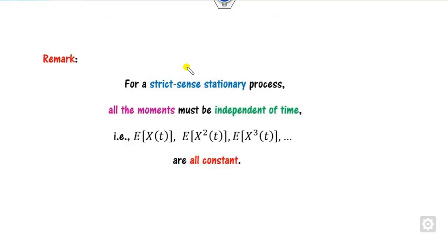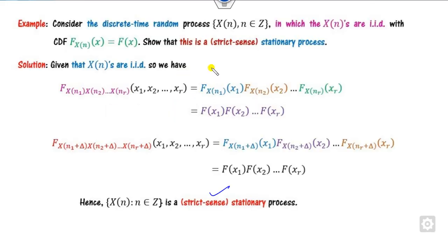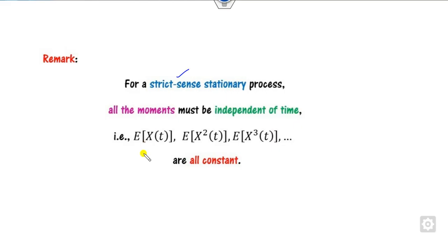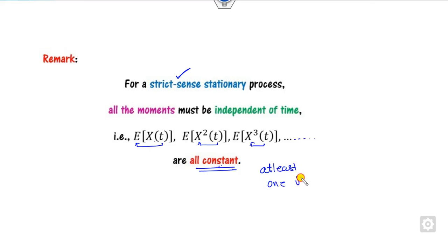Remember that to show a process is strict sense stationary, you could start with the CDF, but it is not easy to compute the CDF for each random process. Instead, compute E[X], E[X²], E[X³], E[X⁴], and so on, and prove that all are constants. If all are constant, the process is strict sense stationary. If at least one of them is not constant, then the process is not strict sense stationary.